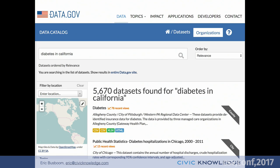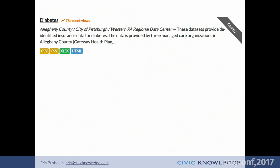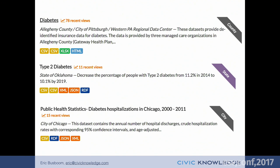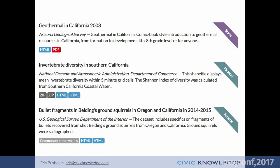Metadata is really important for all sorts of things. Here's a good example from data.gov — this has been true for years. If you do a search for diabetes in California, you would expect to get datasets with diabetes in California, probably something from the CDC. Instead, you actually get diabetes data from Allegheny County in Pittsburgh, the State of Oklahoma, and something from the city of Chicago. You also get a comic book from the geothermal survey about California geysers. There's clearly a problem with the metadata because you can't effectively search for diabetes in California.